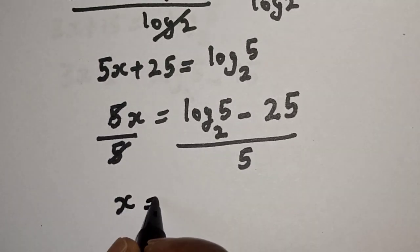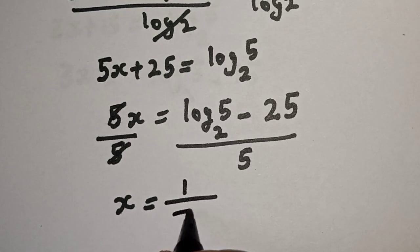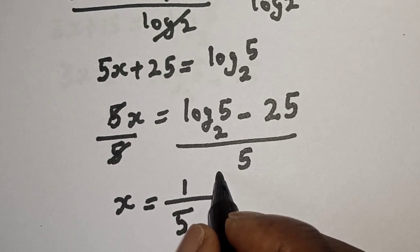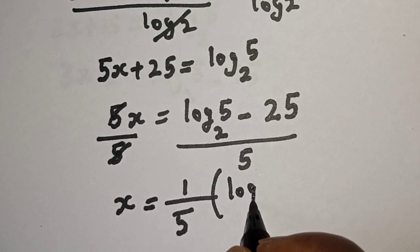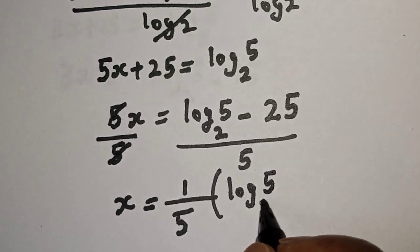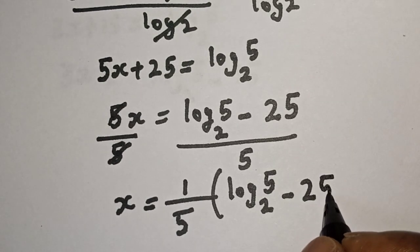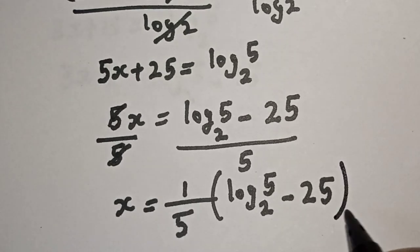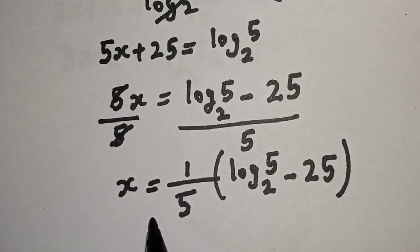s equals 1 over 5 times (log base 2 of 5 minus 25), and this is the final answer.